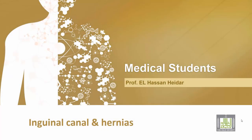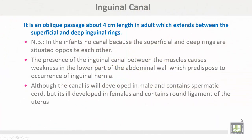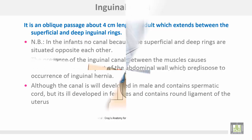The inguinal canal is an oblique passage about 4 cm in length in adults, which extends between the superficial and deep inguinal rings. In infants, there is no canal because the superficial and deep rings are situated opposite each other. The presence of the inguinal canal between muscles causes weakness in the lower part of the abdominal wall, which predisposes the occurrence of inguinal hernia. Although the canal is well developed in males and contains the spermatic cord, it is ill-developed in females and contains the round ligament of the uterus.